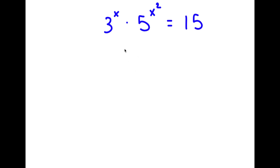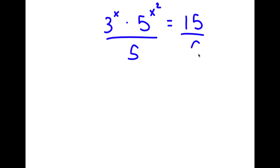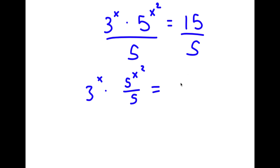In this problem, I have 3 to the power of x times 5 to the power of x squared is equal to 15. The first thing I'm going to do is divide both sides by 5. So now I have 3 to the power of x times 5 to the power of x squared over 5, which is equal to 15 divided by 5, which is 3.